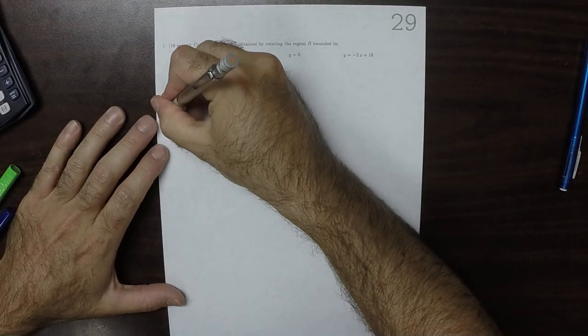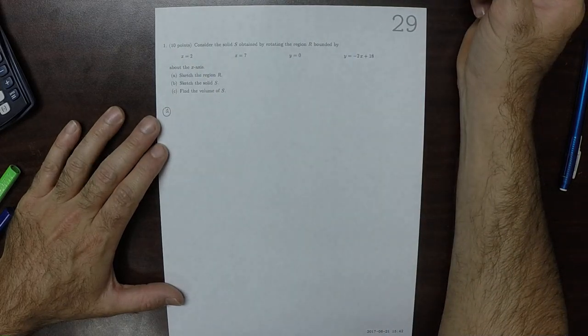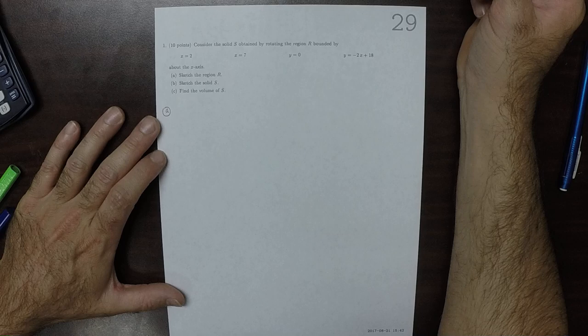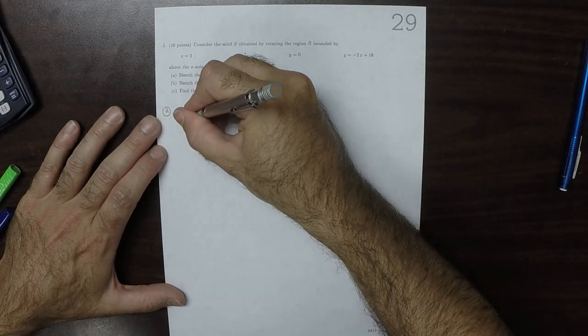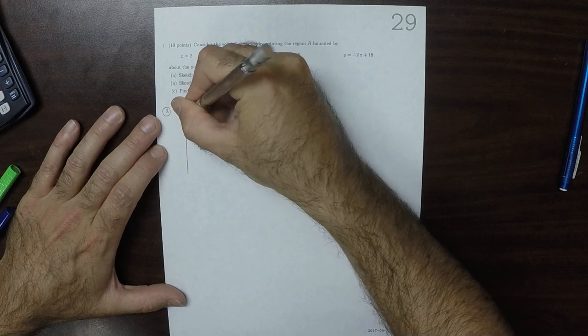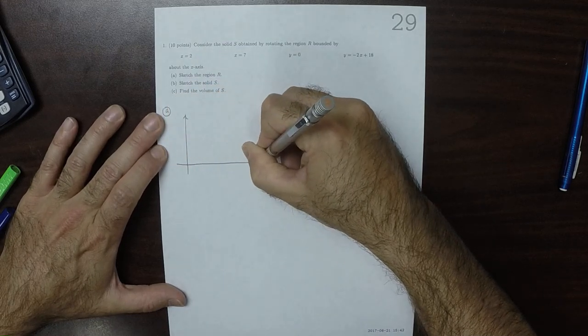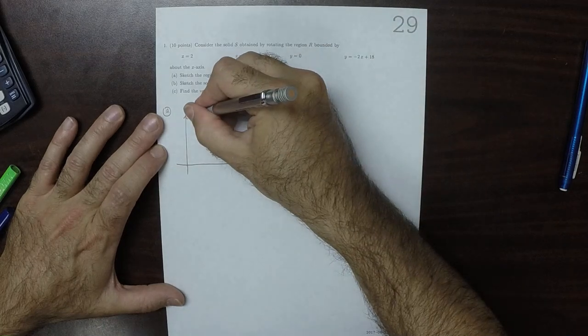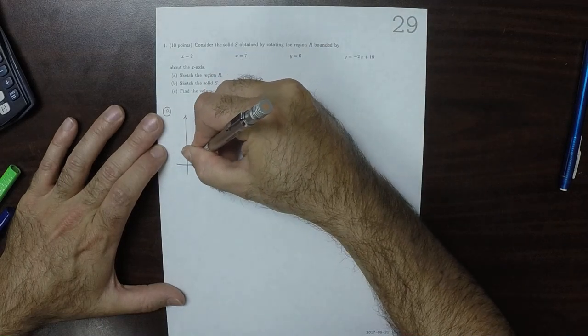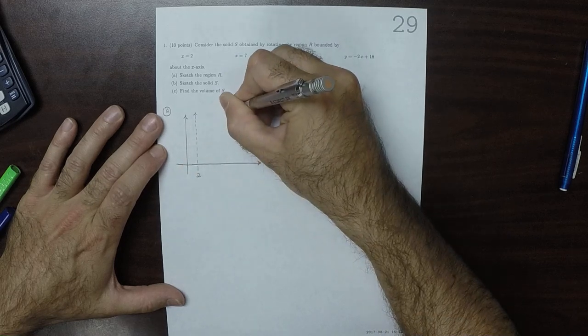Okay, so for part A, the region looks like this. So we've got 2 and 7.